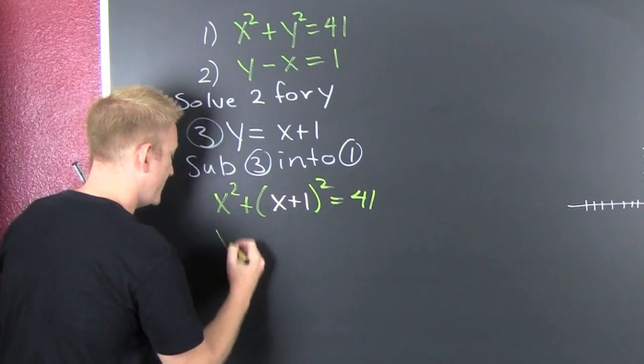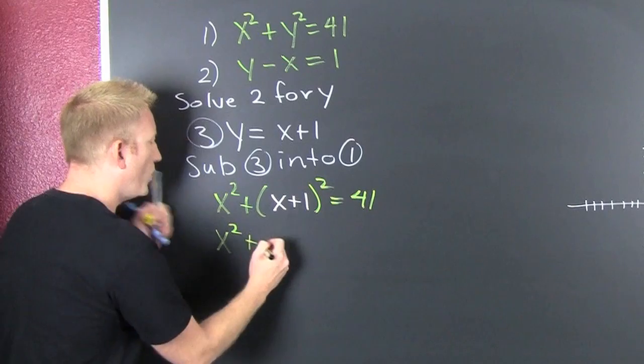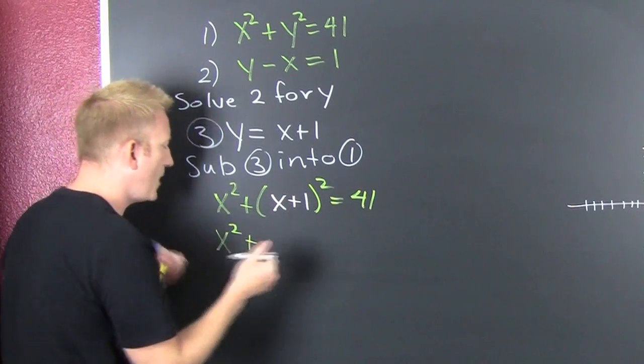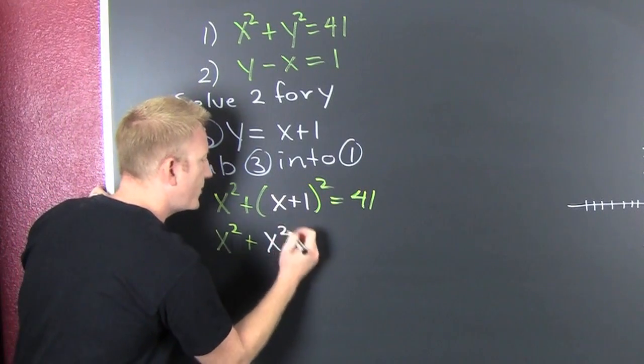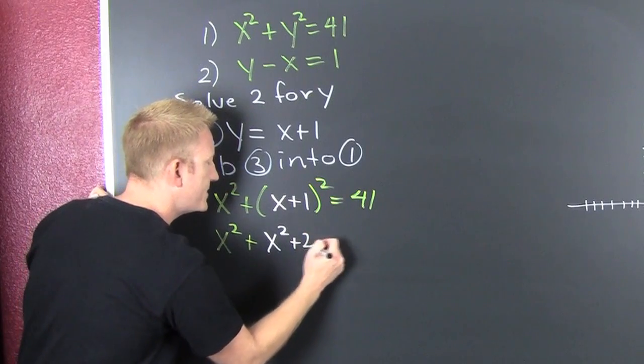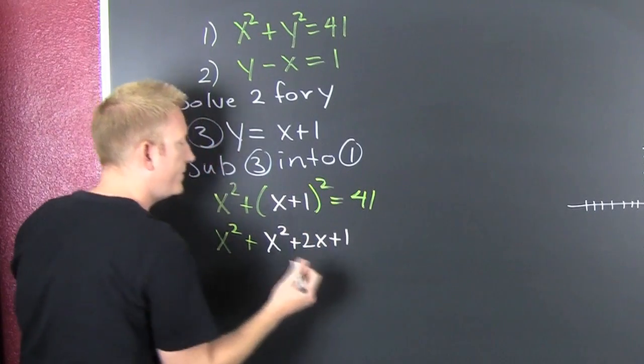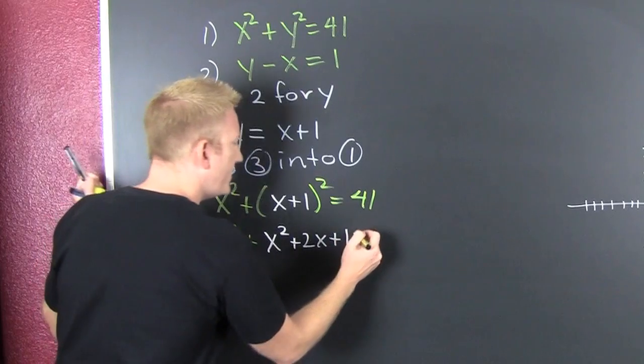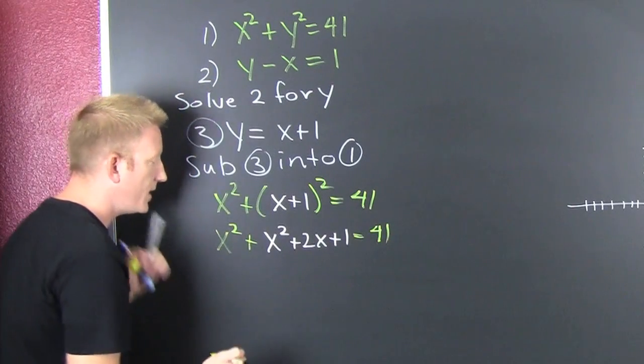And then I go on. What I want to do is I want to expand that out binomially. That's an x squared. This one times that one. Double it. Plus 2x plus 1. And then that's going to be equal to 41.